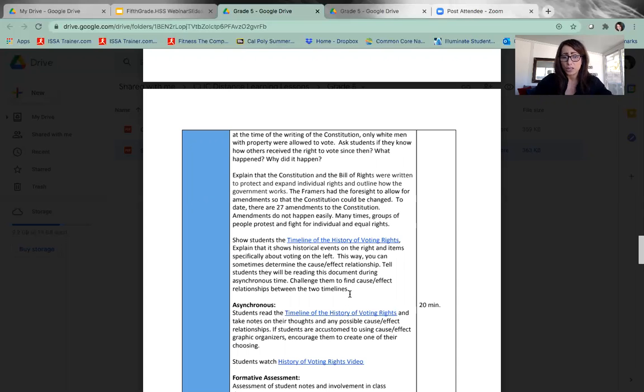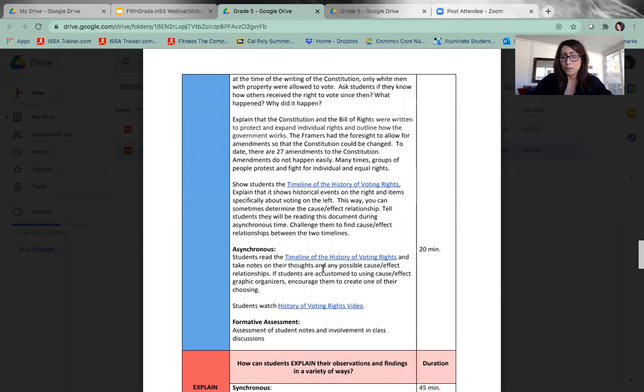During their asynchronous time you give them a link to that timeline and they're going to do some cause and effect graphic and they write some ideas in a graphic organizer which is provided and they will write some sentences, some structured sentences for what they see in terms of this happened in voting right history because this is what's going on in the world in history. So the timeline has like a double side, it has what's happening in voting rights and what's happening in history so they can see a cause and effect relationship and there's several examples within the lesson for you to look at.